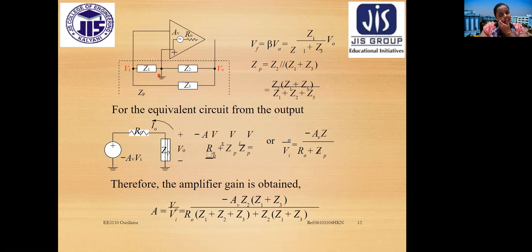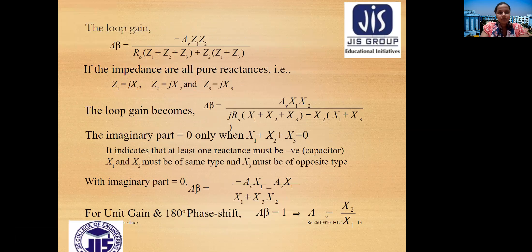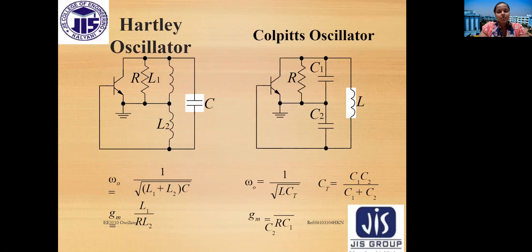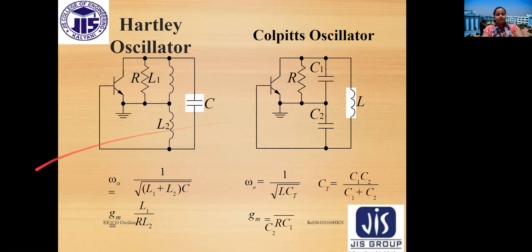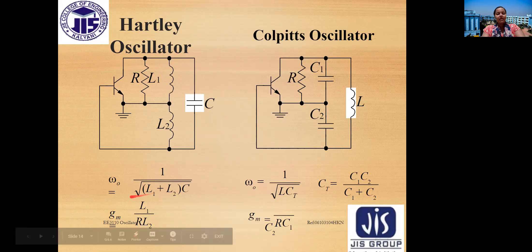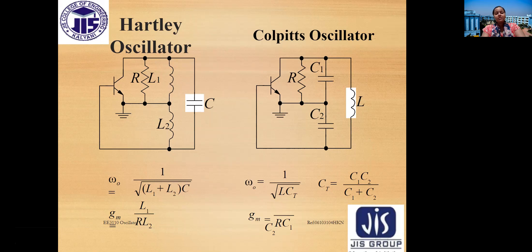The feedback voltage Vf can be written as beta times V0, where beta equals Z1 divided by (Z1 plus Z3). In the Hartley oscillator, a series inductor is connected as a potential divider with a resistor, and the resonant frequency is omega-0 equals 1 over the square root of (L1 plus L2) times C. For the Colpitts oscillator, omega-0 equals 1 over the square root of L times Ct, where Ct equals C1·C2 divided by (C1 plus C2).